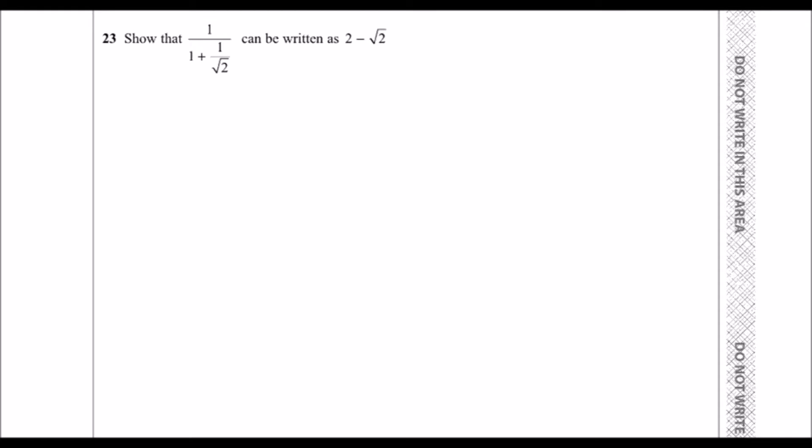Show that 1 over 1 plus 1 over root 2 can be written as 2 minus root 2. So we need to rationalize the denominator here: 1 over 1 plus 1 over root 2.